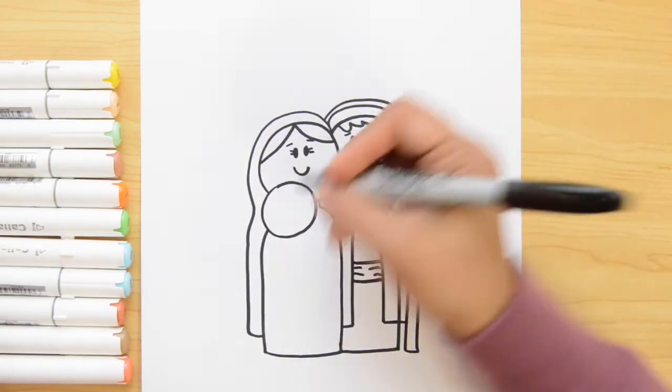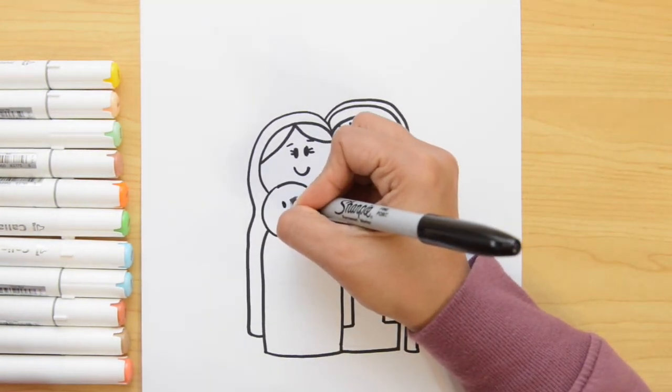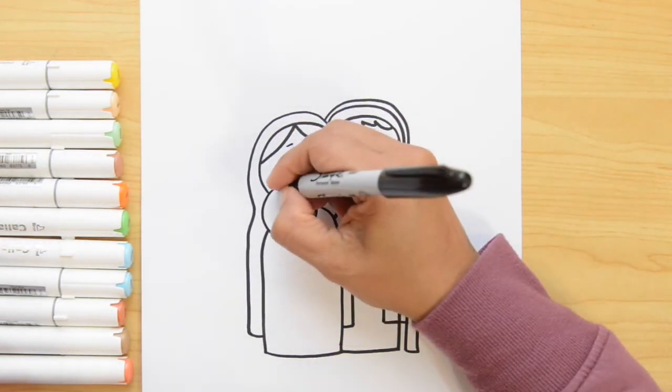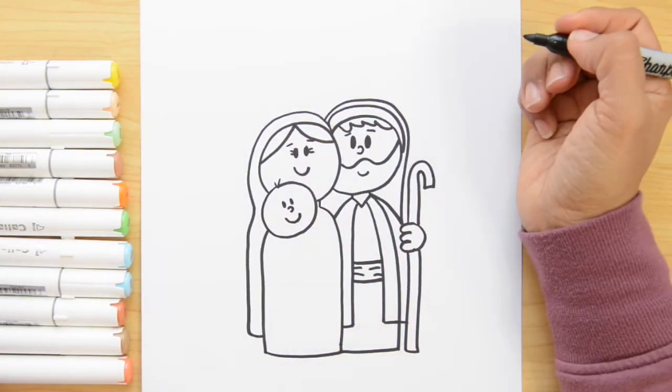Now baby Jesus, the same thing. We're gonna do two ovals. Just teeny tiny. The nose. The smile. And a little bit of hair. Just two lines. There.